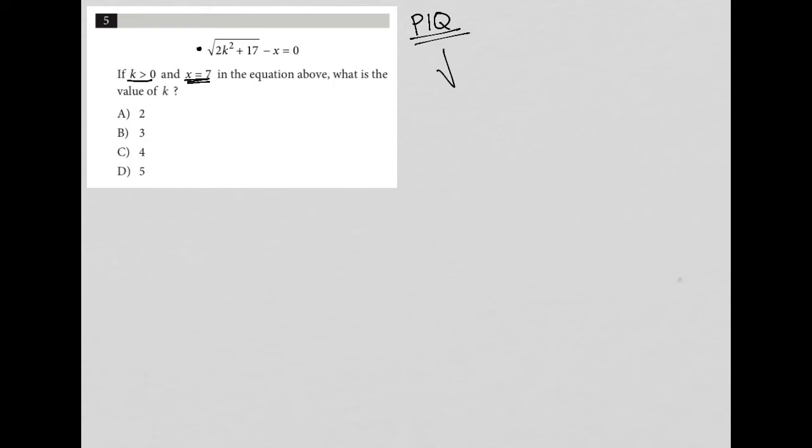I'm given this expression: square root of 2k squared plus 17 minus x equals 0. The question tells me that x equals 7, and I know that k is greater than 0.